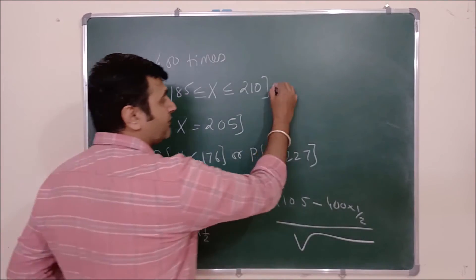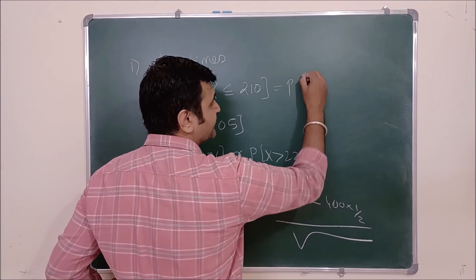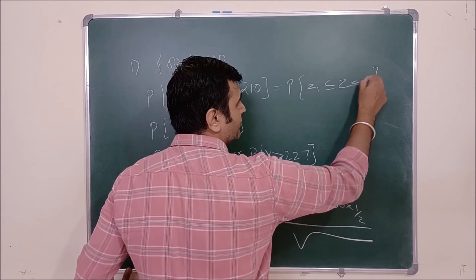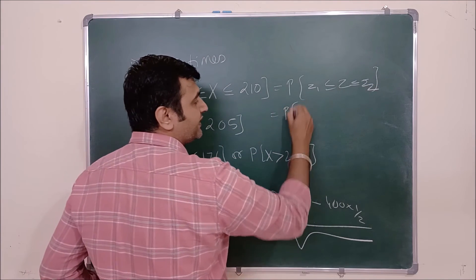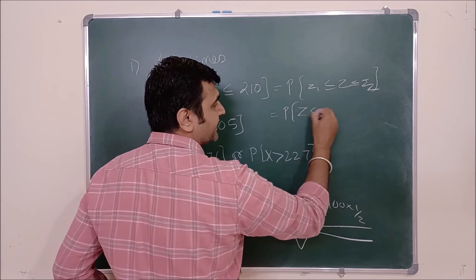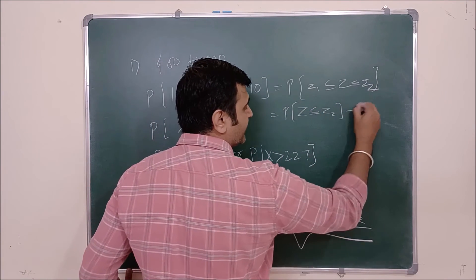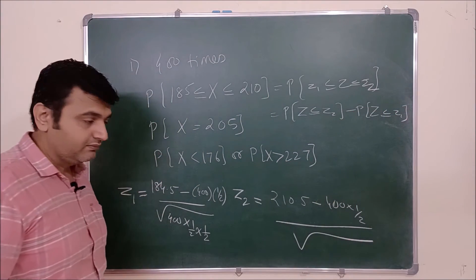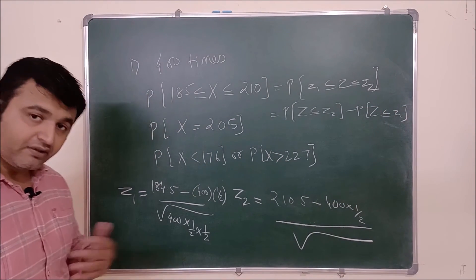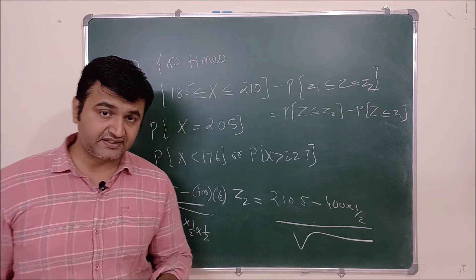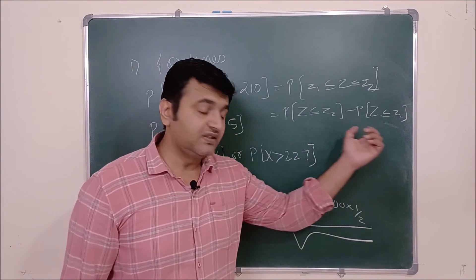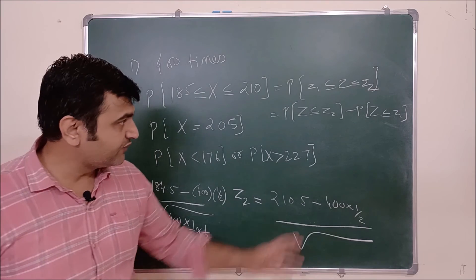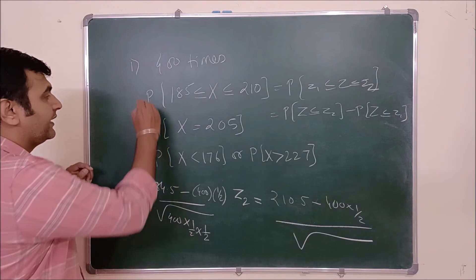Once you have Z1 and Z2, the probability is probability(Z1 ≤ Z ≤ Z2), which equals probability(Z ≤ Z2) minus probability(Z ≤ Z1). So the first homework for you is: tell me what is the answer for part A.